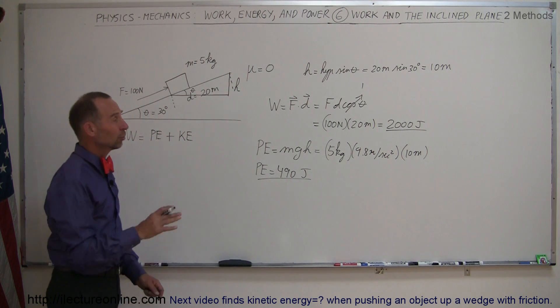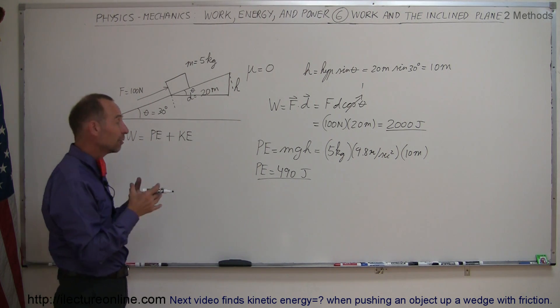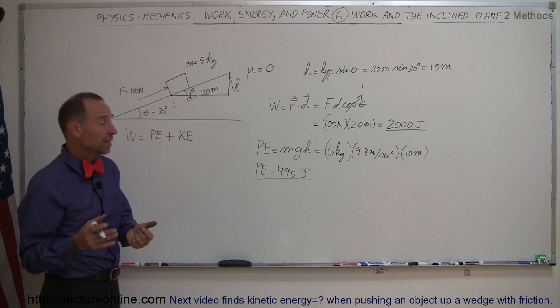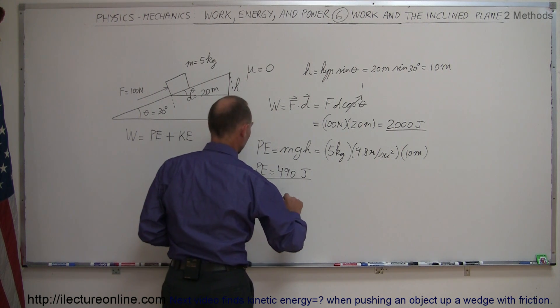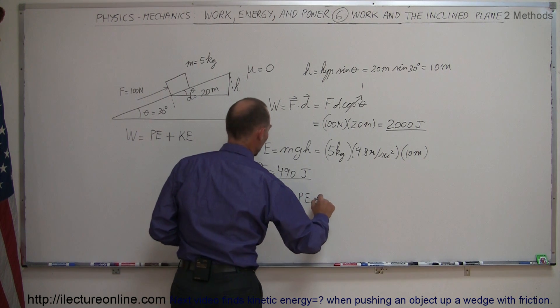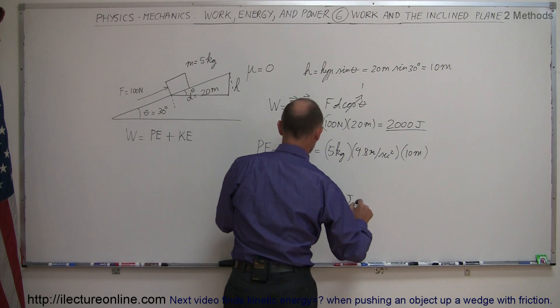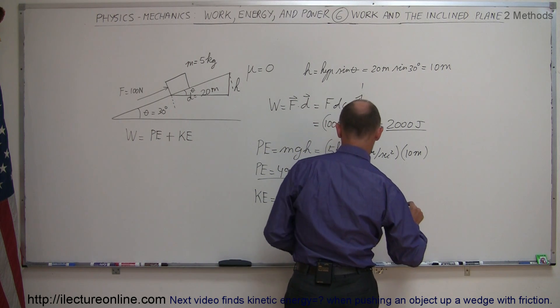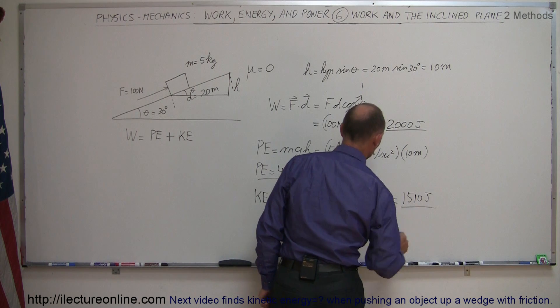All right, so we did 2,000 joules of work, 490 joules was used to give the block potential energy by rising up 10 meters. That means the remainder, the kinetic energy, will be equal to the work done minus the potential energy, which in this case will be 2,000 joules minus 490 joules, which is equal to 1,510 joules.